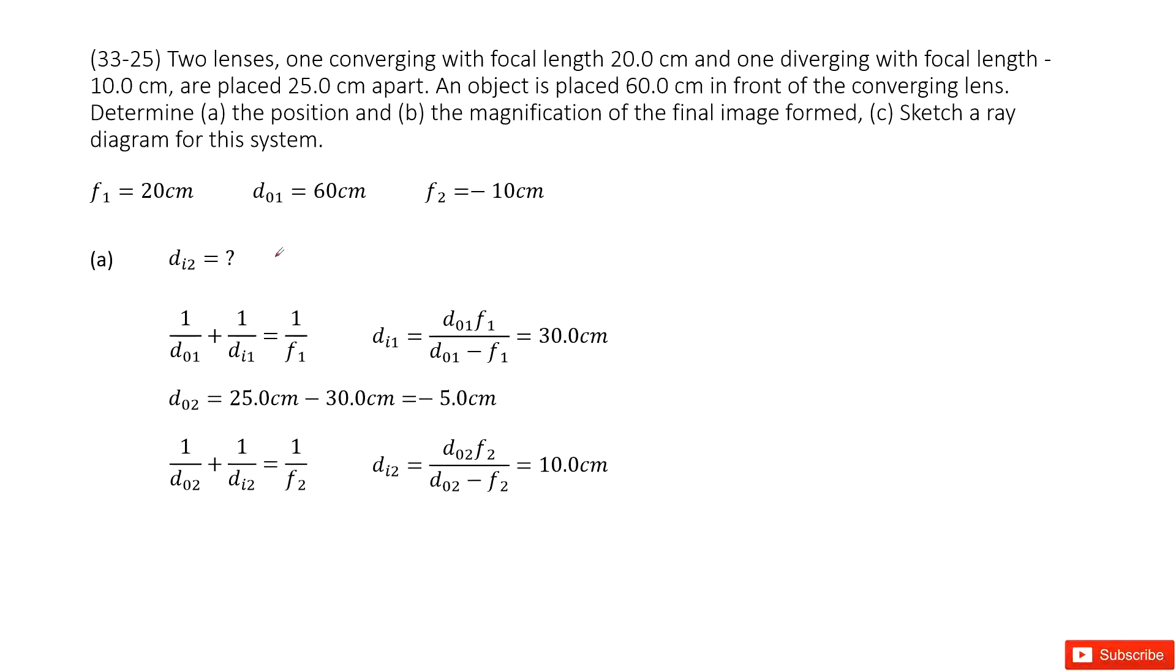We look at this system. We have two lenses and f1 and f2 are given. And we also know the object distance for lens 1, we call it dO1, and the distance between these two lenses is 25 cm. These are given quantities.